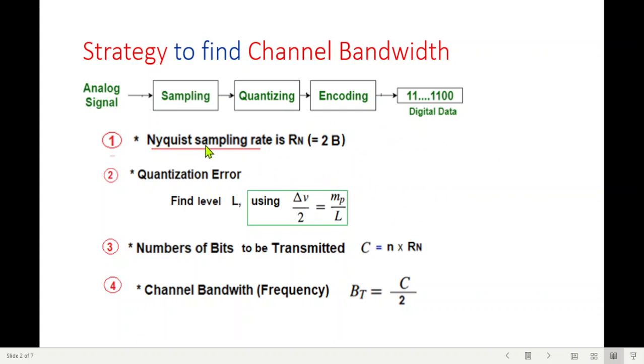What we discussed is that we'll follow these four procedures. We'll find out the Nyquist sampling rate first of all. Then we'll find out quantization error, and from there we'll find L and N, where N is the number of bits. Then we'll calculate the number of bits to be transmitted. And from here, we can find out the channel bandwidth, which is half of the number of bits transmitted.